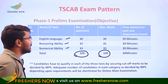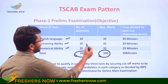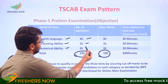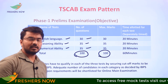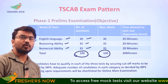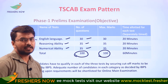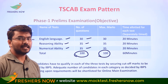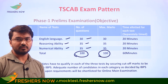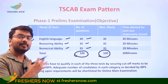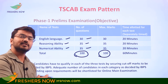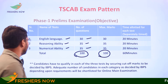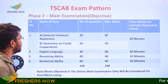Section-wise, English Language, Reasoning Ability, and Numerical Ability each have 35 questions. The total number of questions is 100, for 100 marks. There is a section-wise cut-off, and candidates must qualify overall and section-wise to be called for the mains examination.